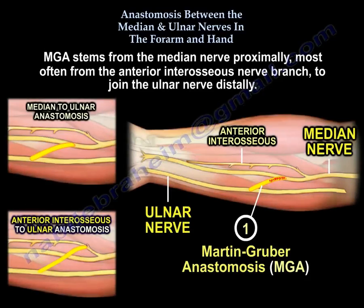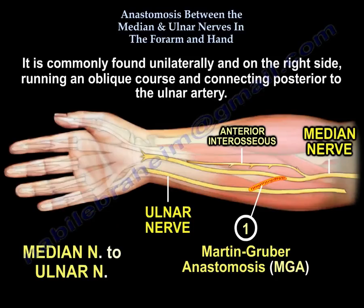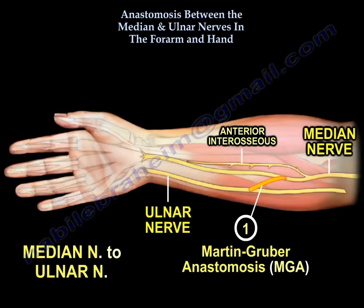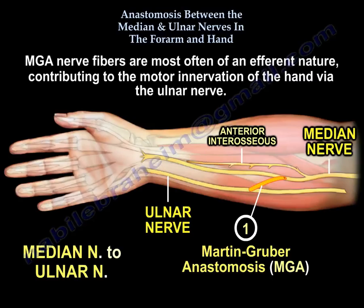Martin Gruber stems from the median nerve proximally, most often from the anterior interosseous nerve branch, to join the ulnar nerve distally. It is commonly found unilaterally and on the right side, running an oblique course and connecting posterior to the ulnar artery. Martin Gruber nerve fibers are most often of an efferent nature, contributing to the motor innervation of the hand via the ulnar nerve.